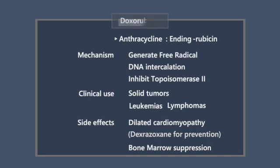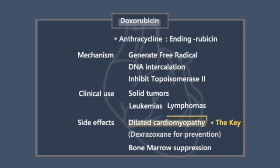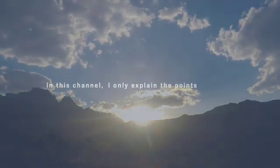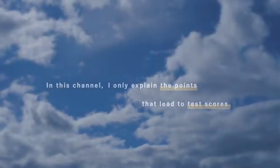What is the key point? The key point here is that doxorubicin causes dilated cardiomyopathy. In this channel, I only explain the points that lead to test scores.